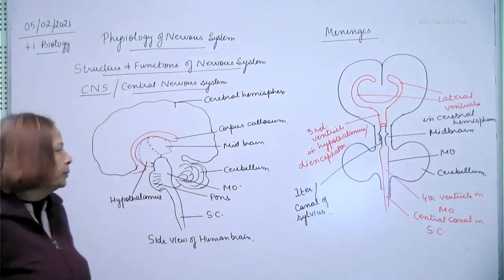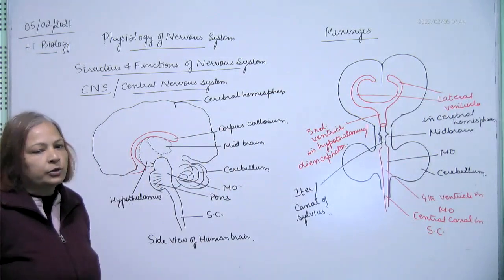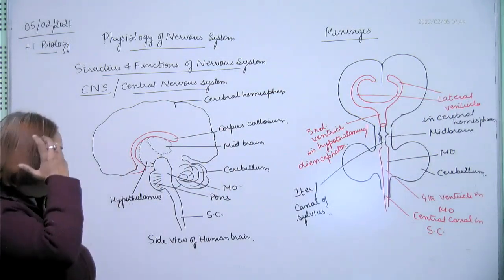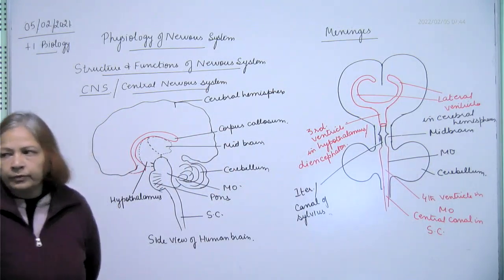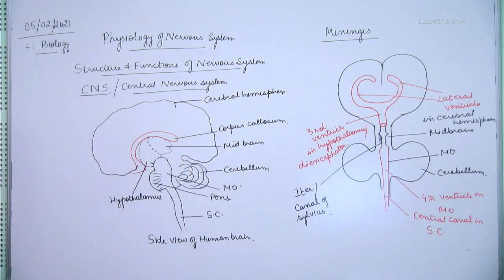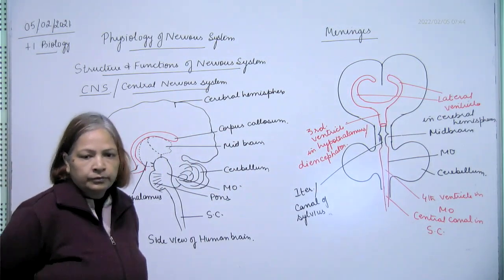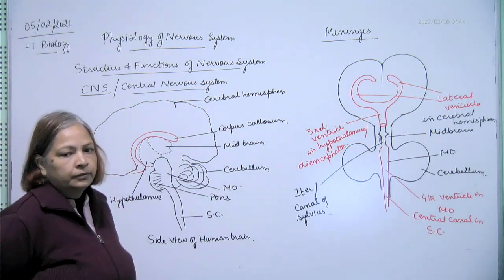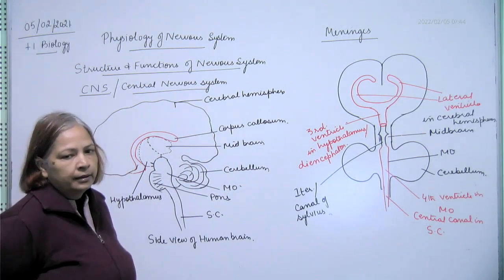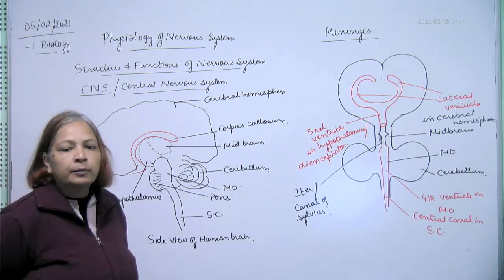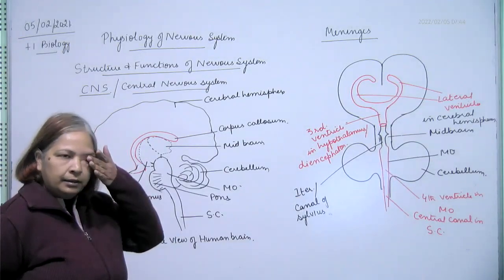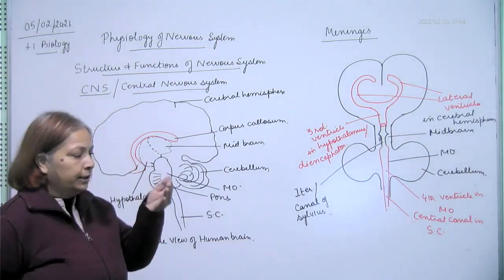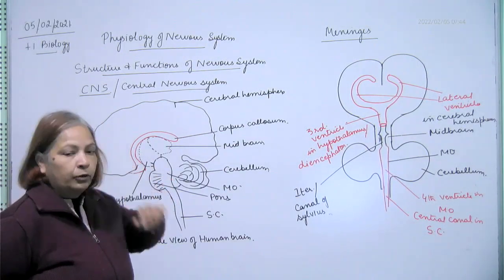So write down. Cerebrospinal fluid. The ventricles consists of cerebrospinal fluid. It is also present in subarachnoid space. It is cerebrospinal fluid. Also present in subarachnoid space.